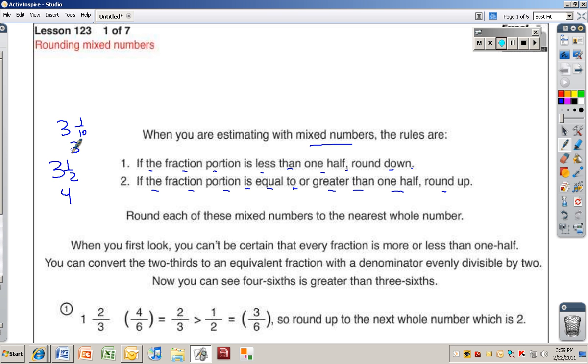Round each of these mixed numbers to the nearest whole number. When you first look, you can't be certain that every fraction is more or less than one half. You can convert the 2 thirds to an equivalent fraction with a denominator evenly divisible by 2. Now you can see four sixths is greater than three sixths. So round up, now that's too complicated.